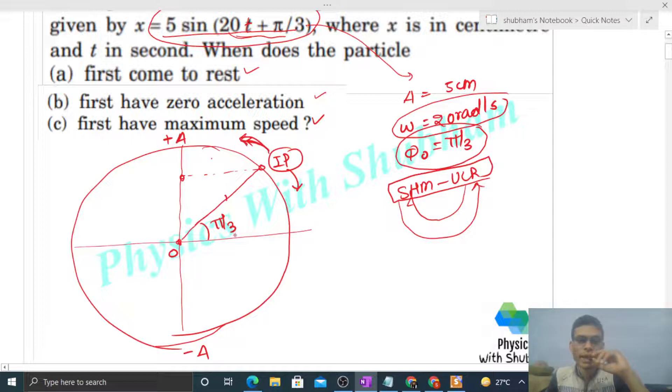Towards the extreme position, this angle will increase. Now we need to determine when this particle's projection doing SHM will first come to rest. When will it come to rest? When this particle reaches A, because at that time its projection will be at +A, the extreme position. At the extreme position, velocity becomes zero.